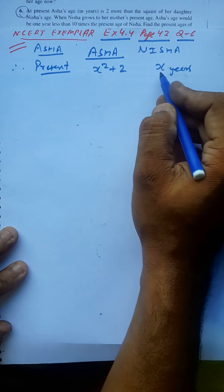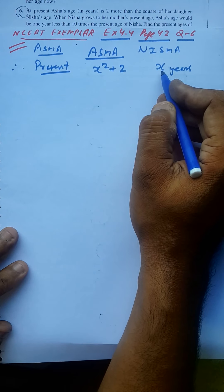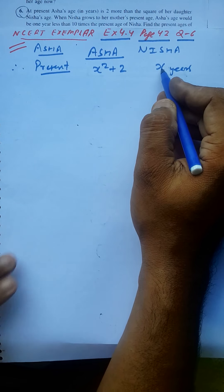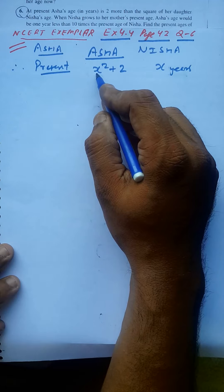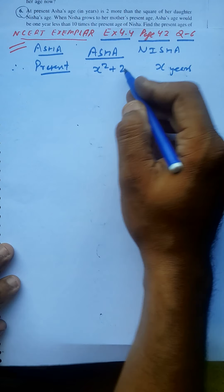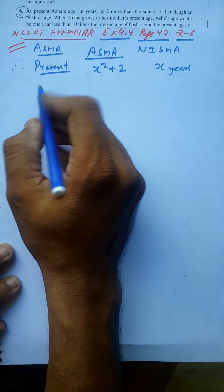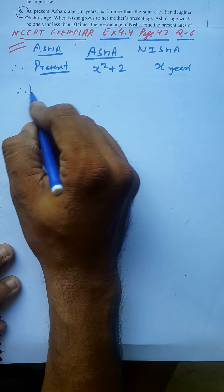So let Nisha's present age be x. Then Asha's present age is x squared plus 2.